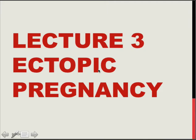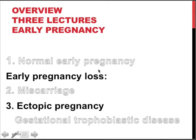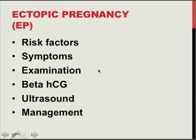This is the third lecture of this trilogy in relation to early pregnancy. We first discussed normal pregnancy, in the second we focused on miscarriage, and now ectopic pregnancy is the topic. As part of lecture three we will also present gestational trophoblastic disease or molar pregnancy. We will focus on risk factors, symptoms, examination findings, use of beta-HCG and ultrasound scan, and management options — all relevant for a clinician and quite handy for a student preparing for an exam.